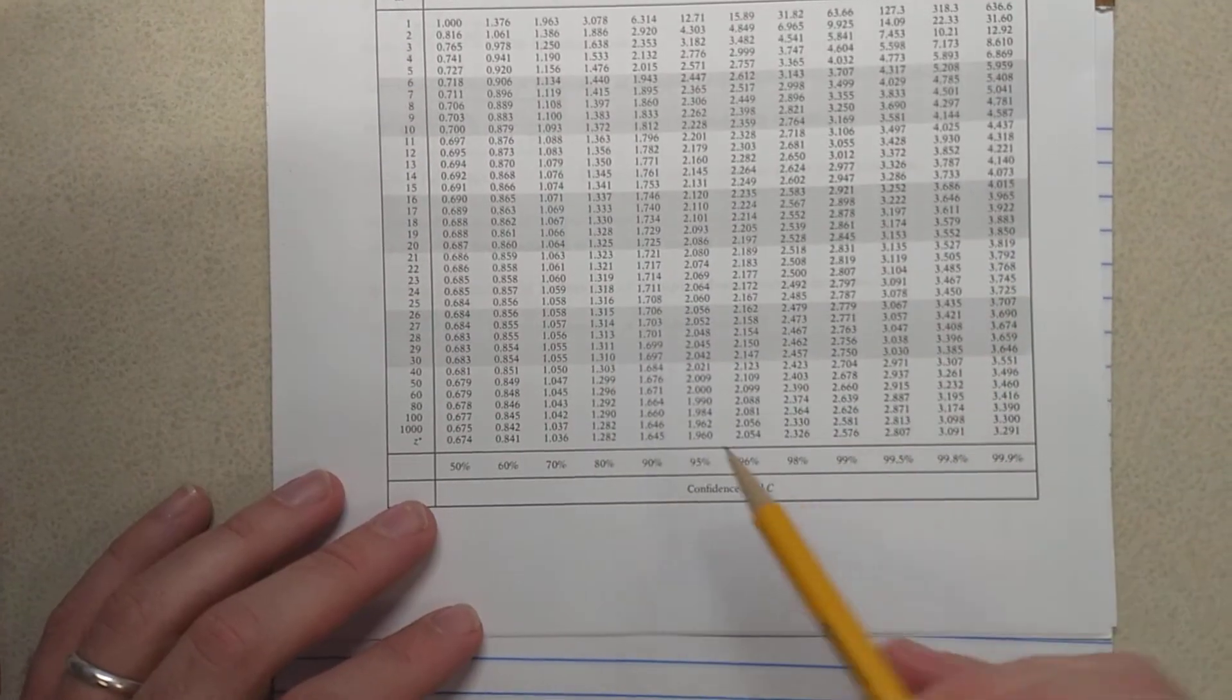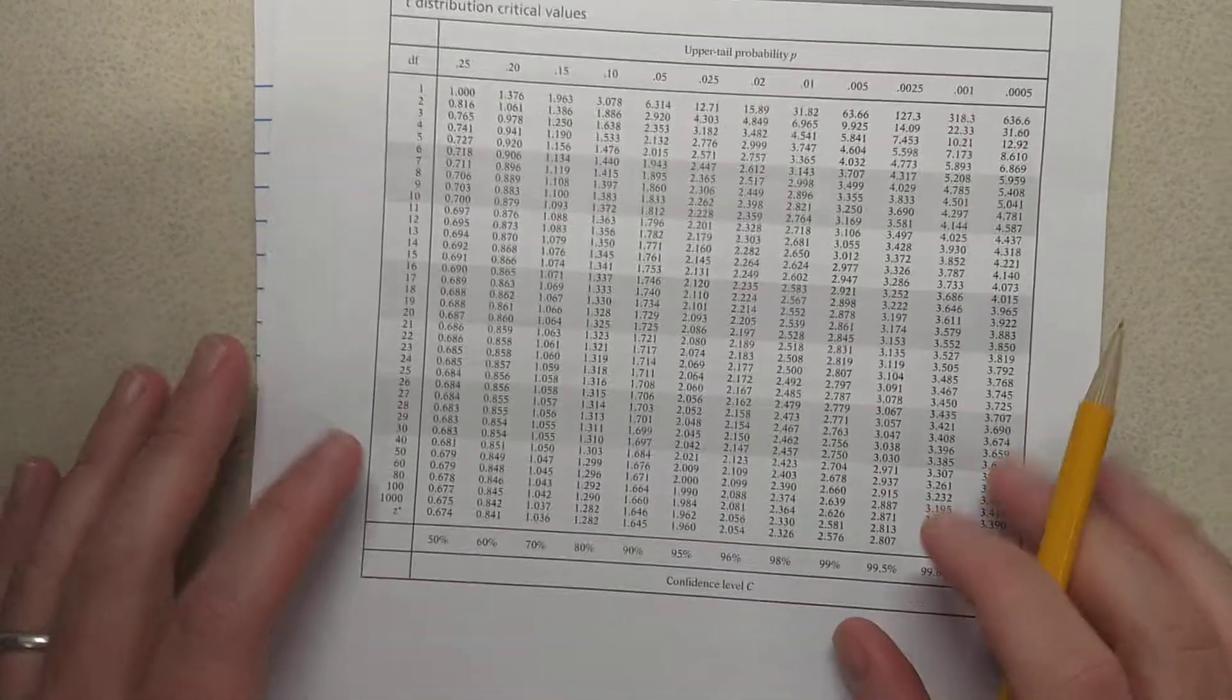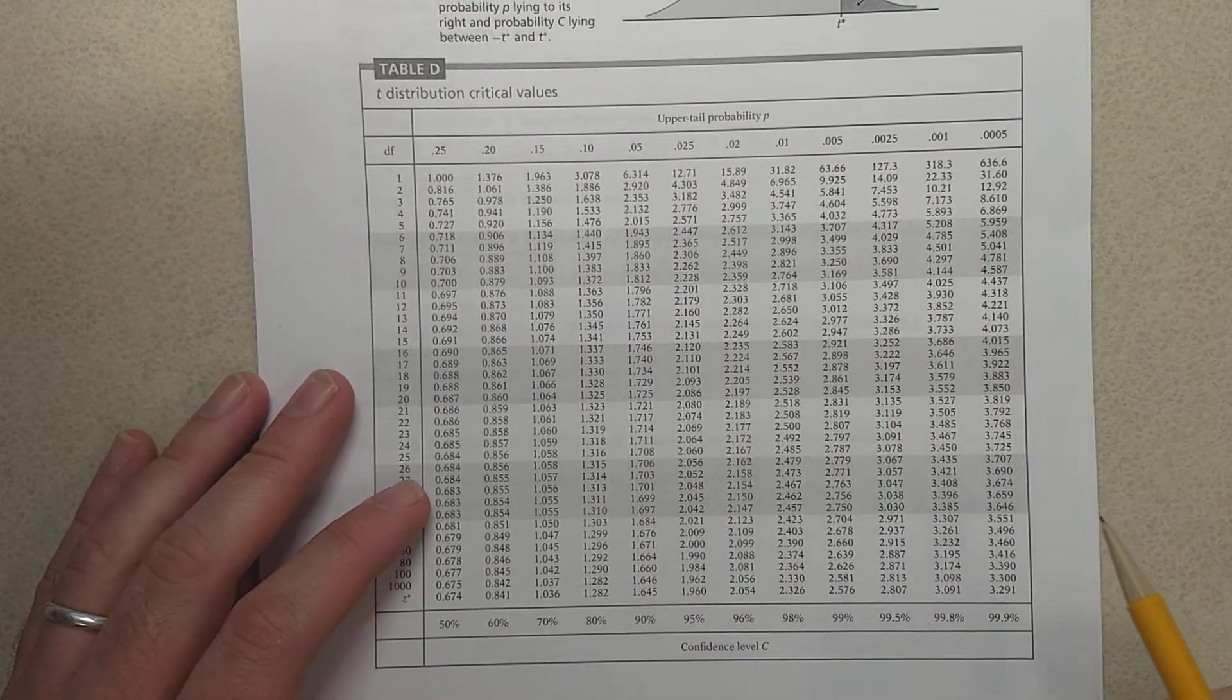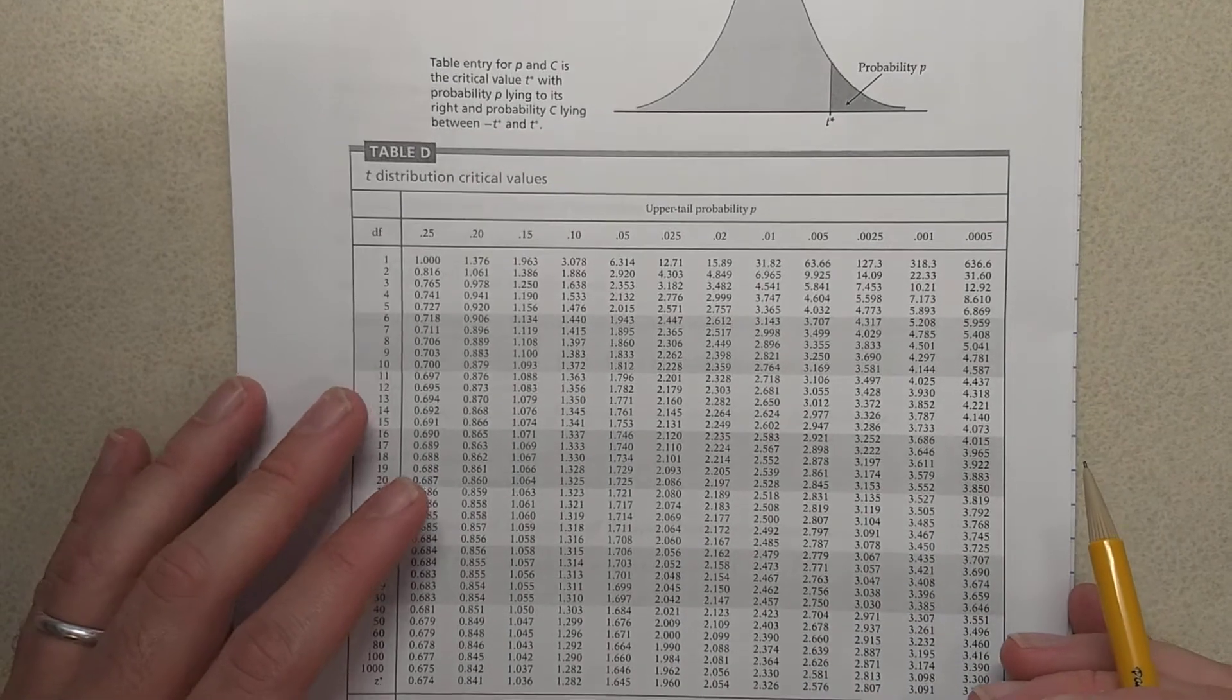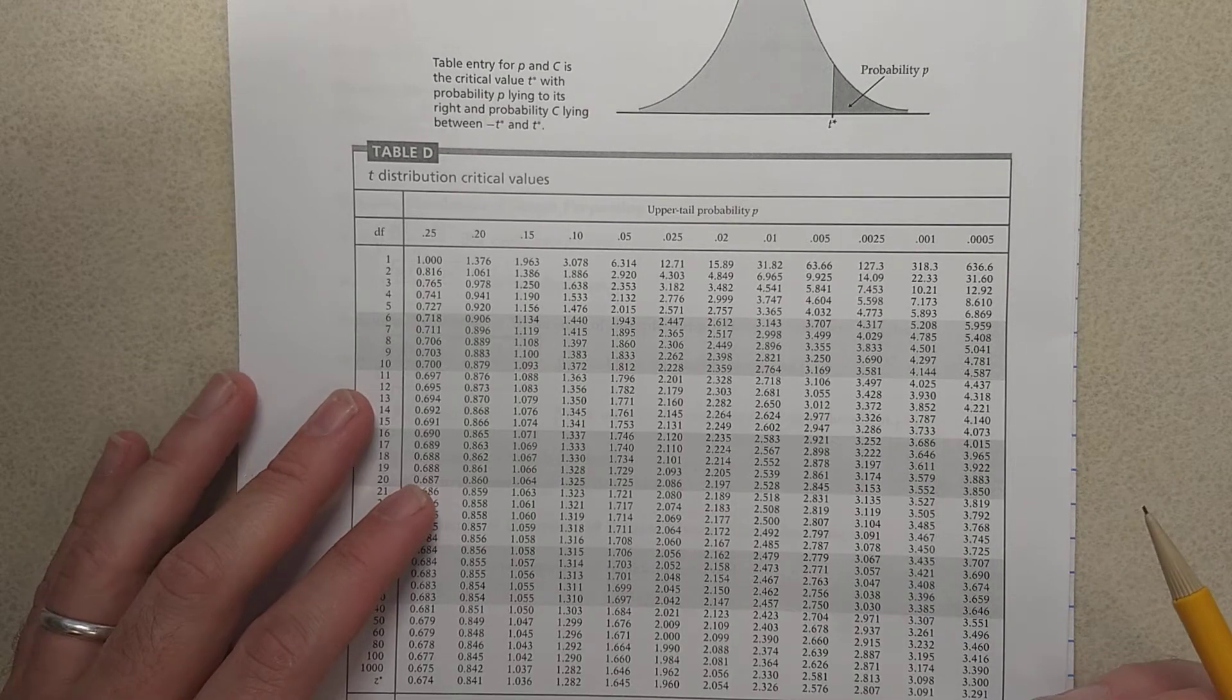This is okay for confidence intervals because your common confidence levels are what's included here. But if you want to do something like a significance test, then you cannot compute exactly the p-value at the end like you might want.